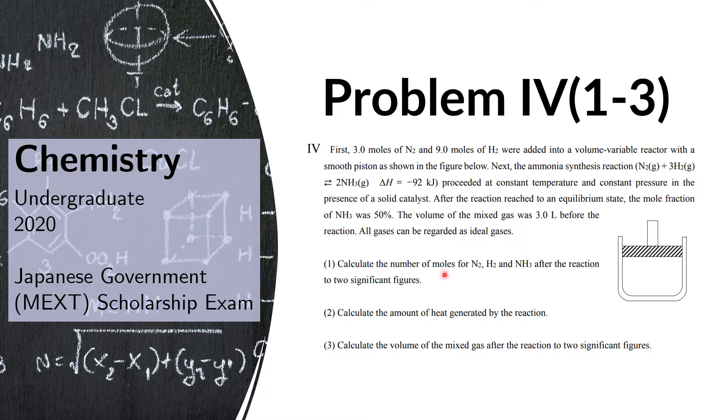We need to calculate the number of moles for nitrogen, hydrogen, and ammonia after the reaction to two significant figures. We need to calculate the amount of heat generated by the reaction, and we also need to calculate the volume of the mixed gas after the reaction to two significant figures.